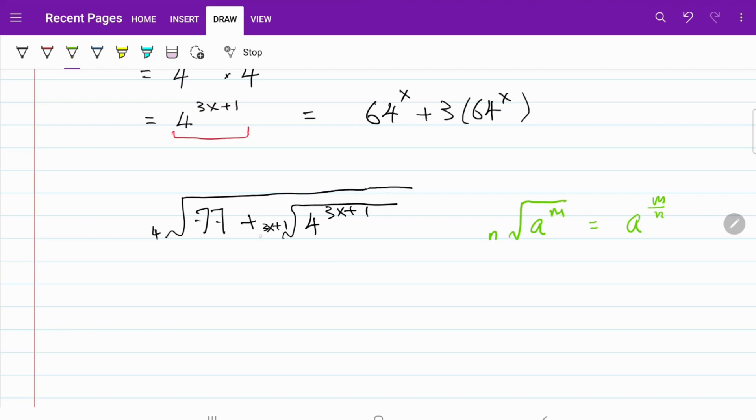And we are going to apply this to this part right here. So now this expression becomes 77 plus 4 to the power of 3x plus 1 over 3x plus 1.